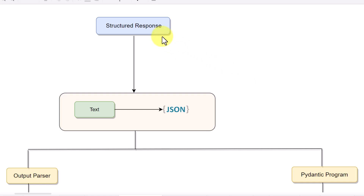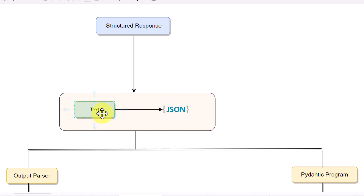In this video we will cover how to generate a structured response from your LLM model. Generally when we use an LLM model the output comes in a normal text or raw string format, but what we are exploring here is whether it's possible to convert this text into a certain format like JSON, so that it would be easier for other applications in your domain to leverage and utilize your Gen AI application.